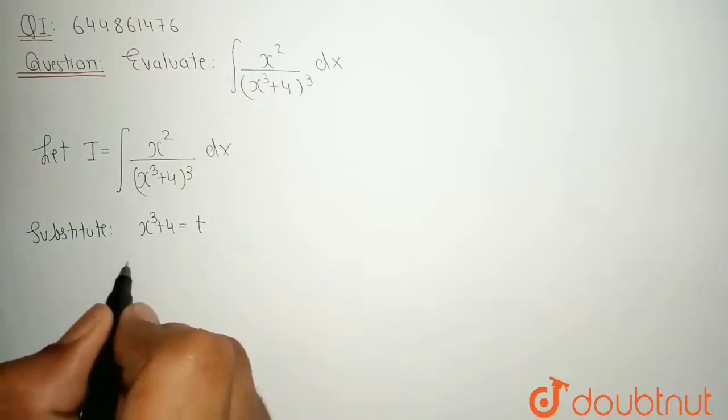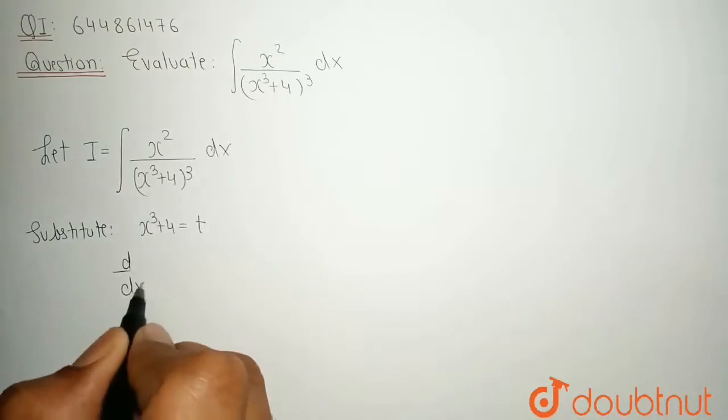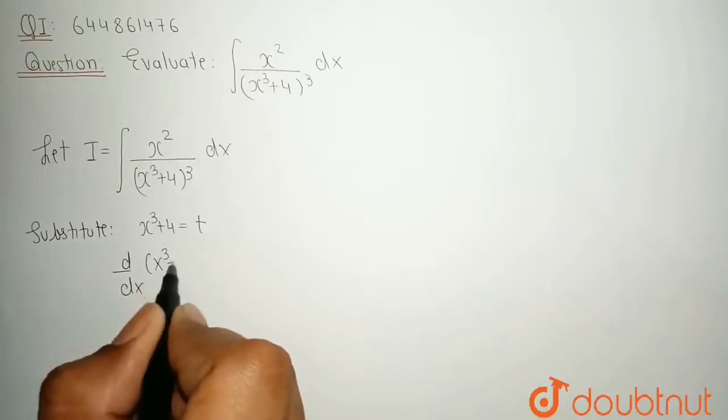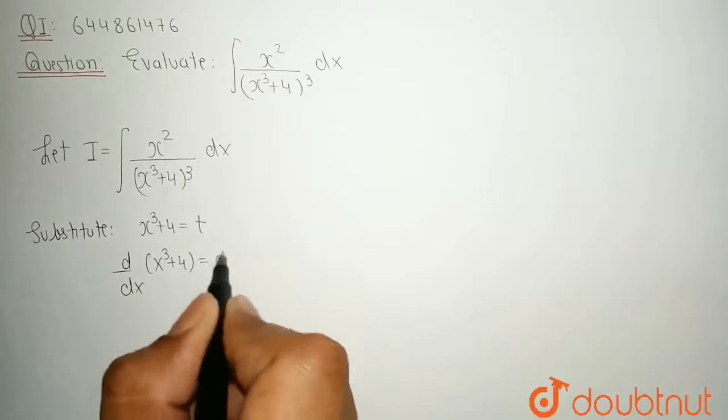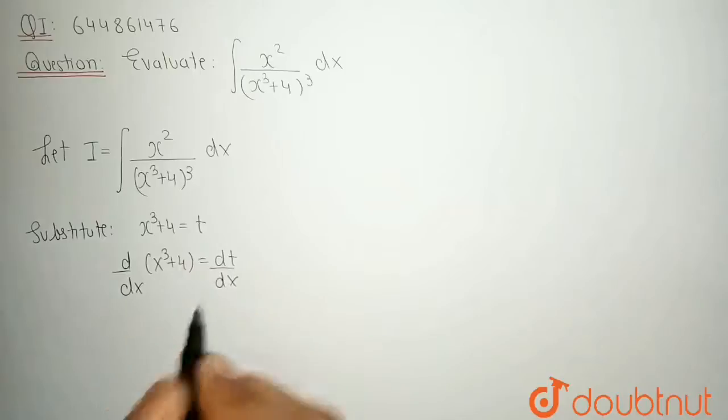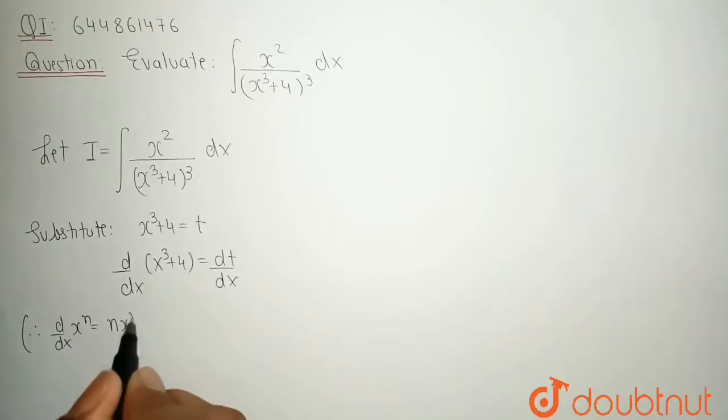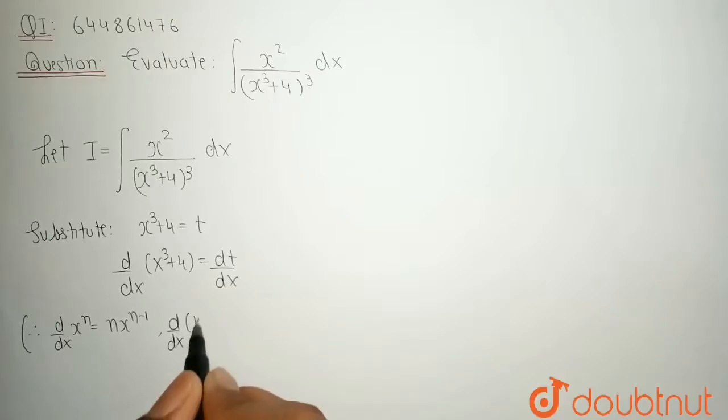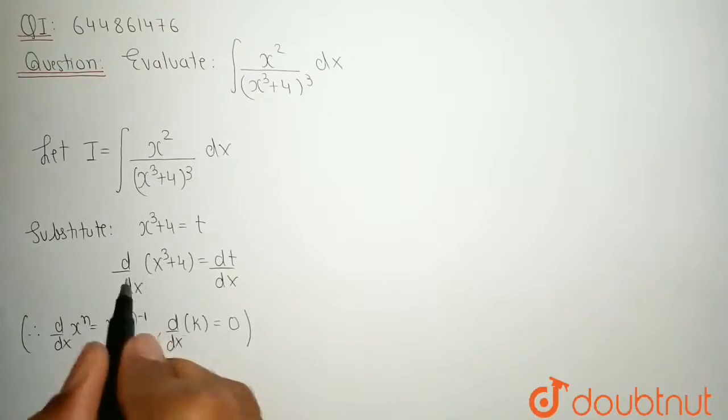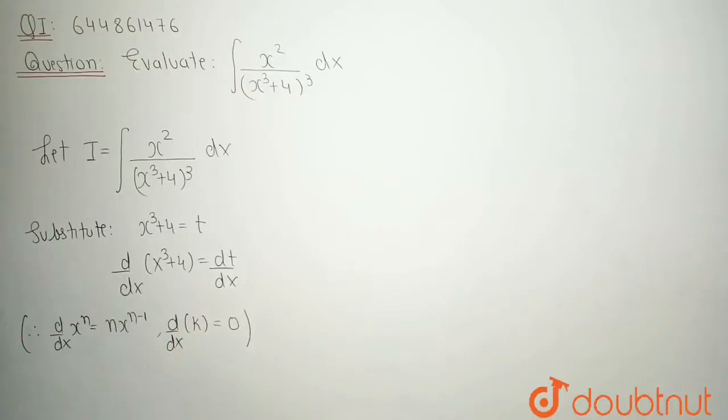Differentiate both sides with respect to x. So, we get d by dx of x cube plus 4 is equal to dt by dx. We know the formula d by dx of x to the power n is n x to the power n minus 1. And d by dx of constant is 0. I can apply both formulas on this given differentiation.